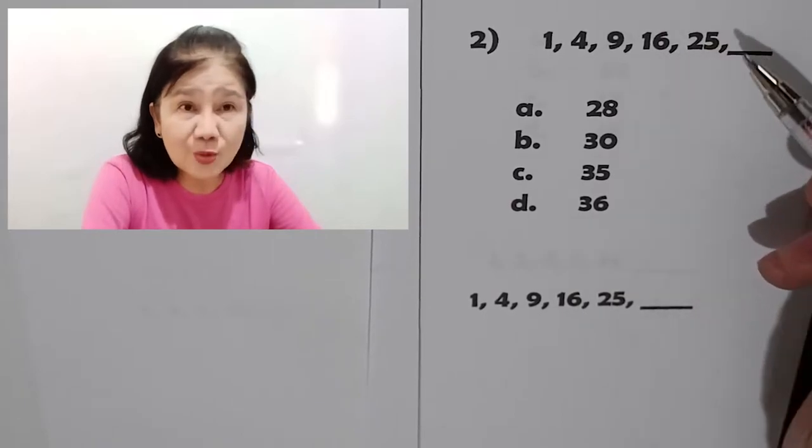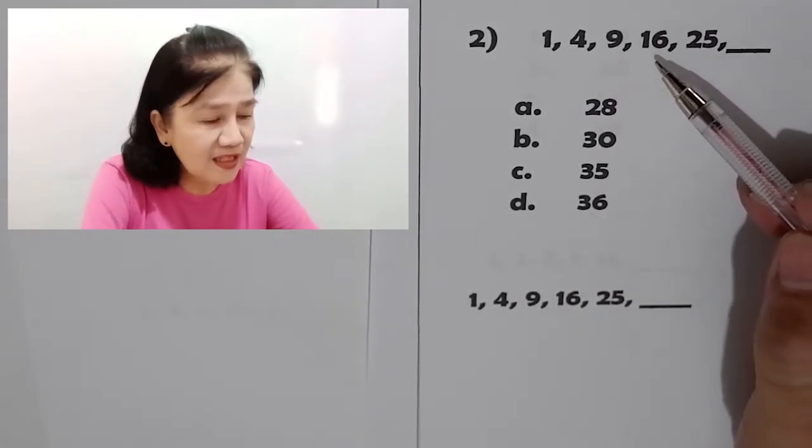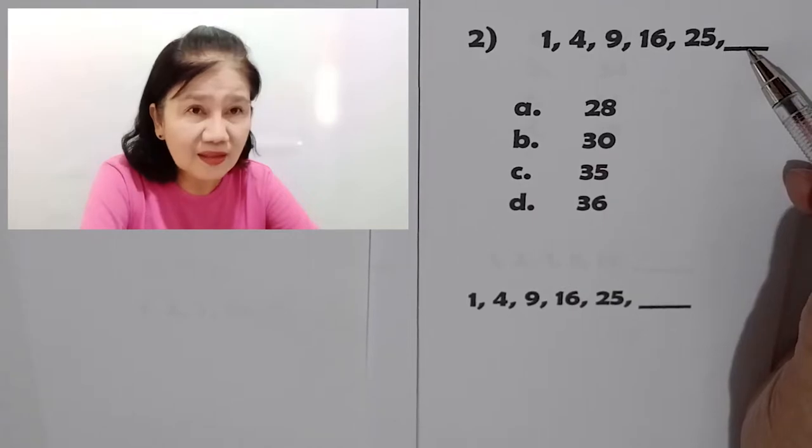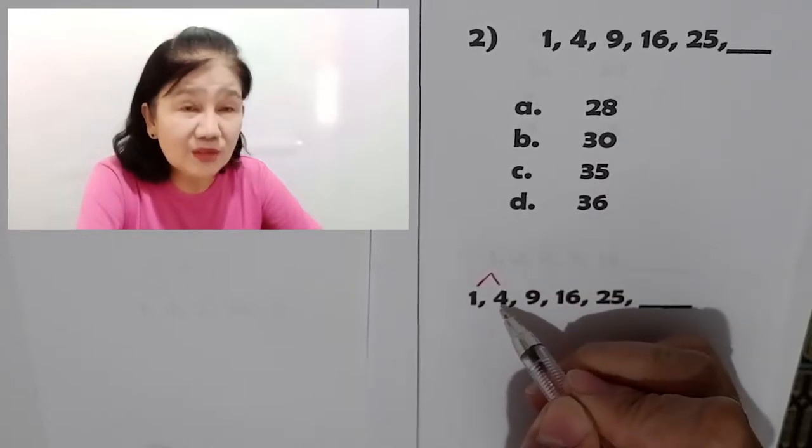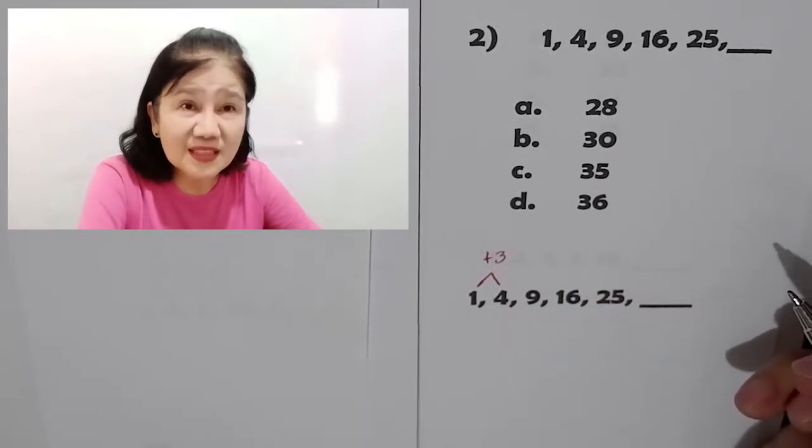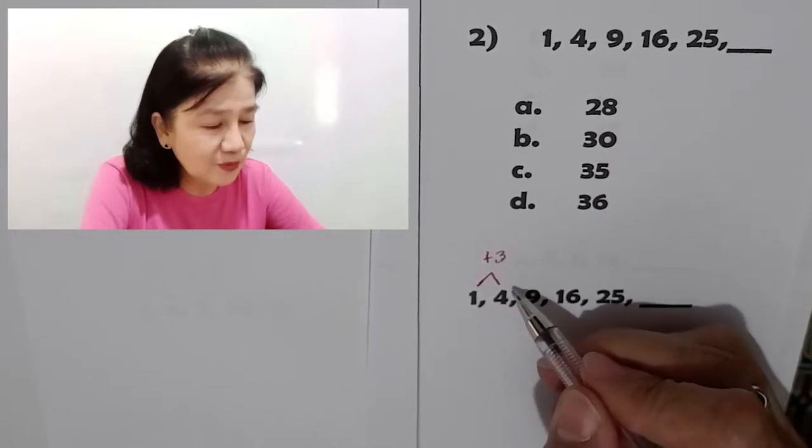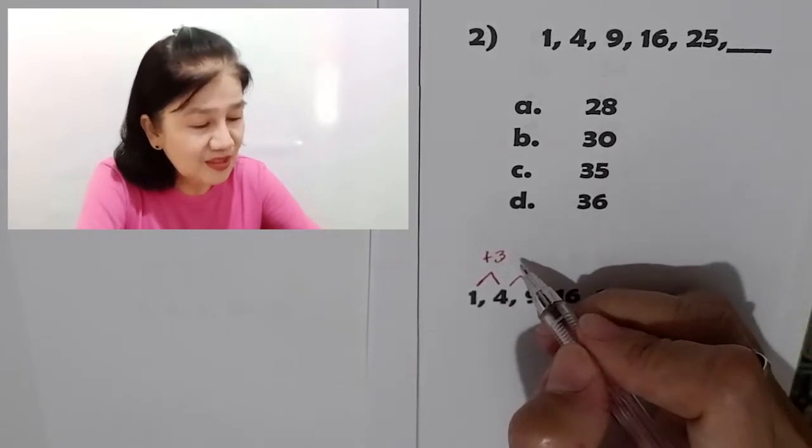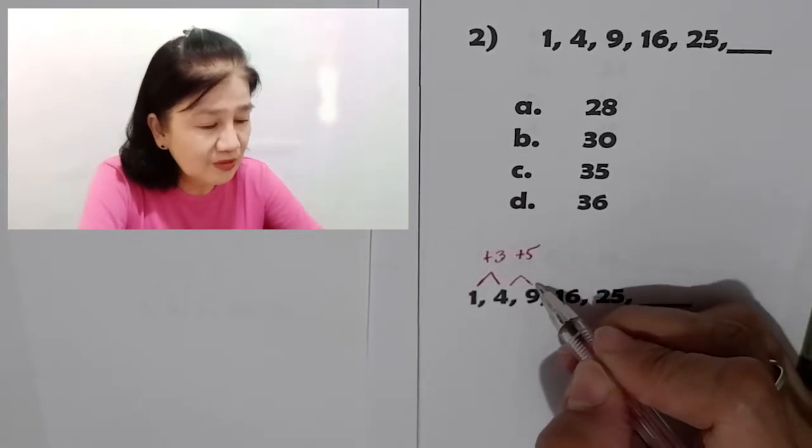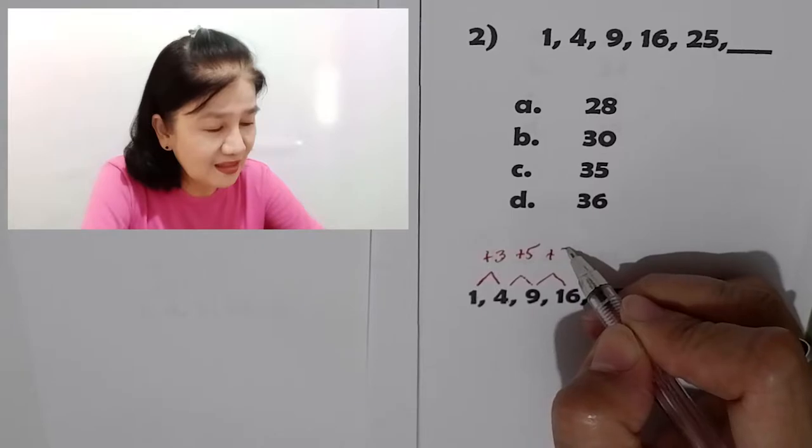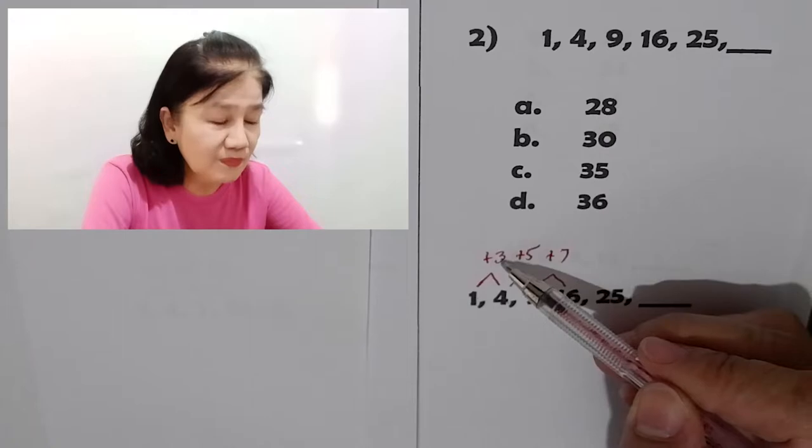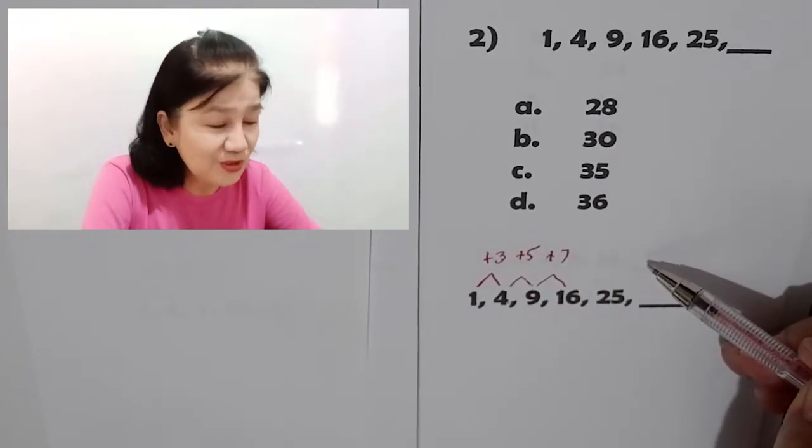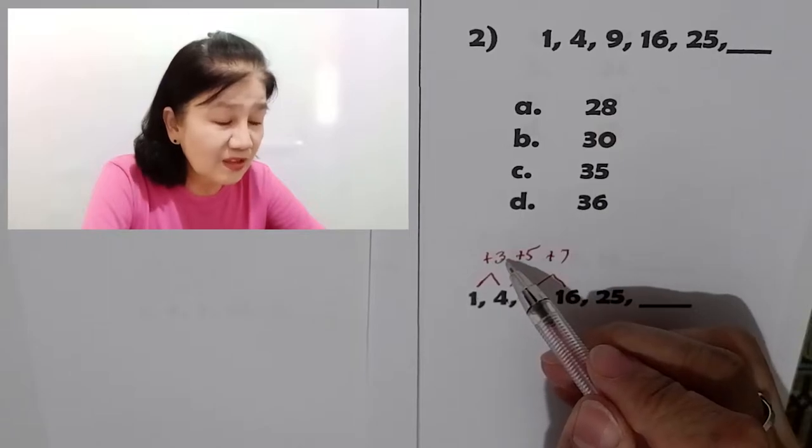Let's proceed to problem number 2. We have here the sequence of numbers 1, 4, 9, 16, 25 blank. So, you find a pattern again. What do you add to 1 to get 4? Same thing. 1 plus 3 is 4. What about 4 to 9? So, this is plus 5. What about 9 to 16? We're going to add 7. So, you now see that you don't have a consistent number which is being added. So, what you do is analyze.